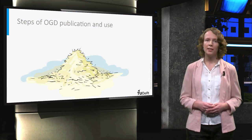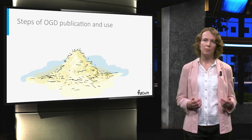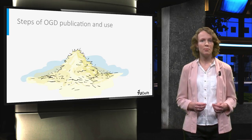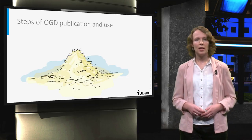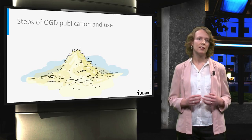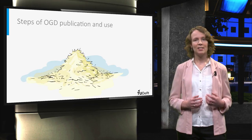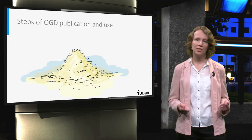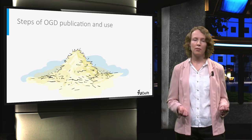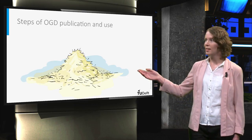Third, potential data users can find this data by searching open data portals. This can be done manually, however, nowadays this is also often done automatically by machines. For instance, application programming interfaces or APIs can be used for this purpose. Since open government data is provided through a large variety of portals, finding the data that someone is looking for can be challenging, especially if he or she does not know whether the data exists and which government organization creates or collects the data. Users may be looking for the needle in the haystack.